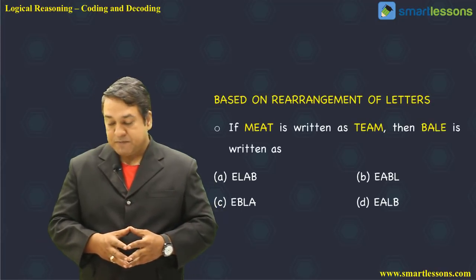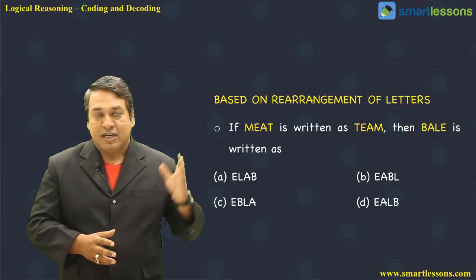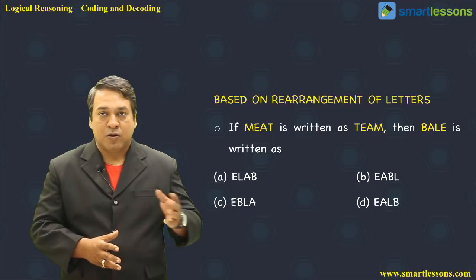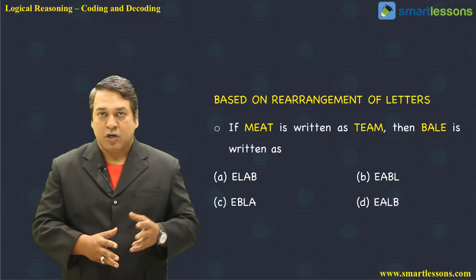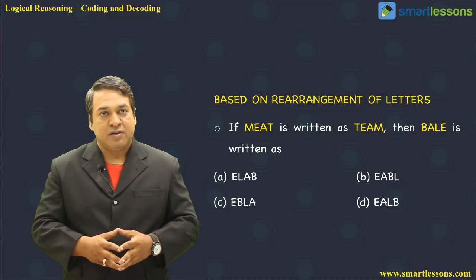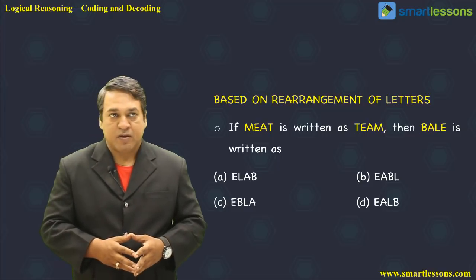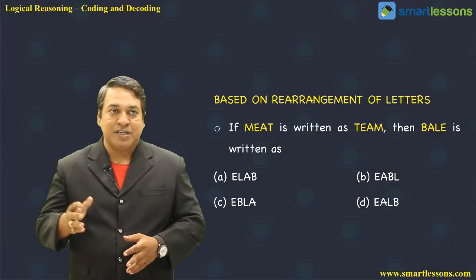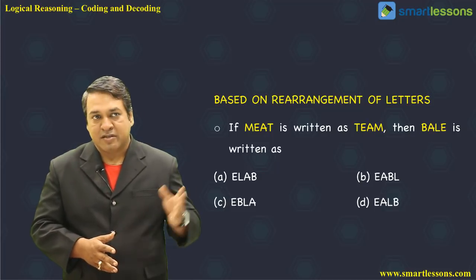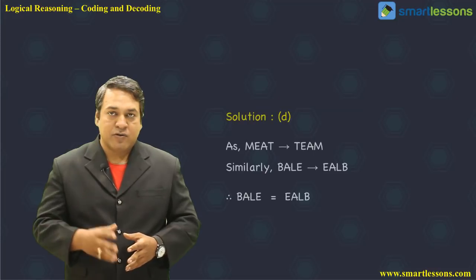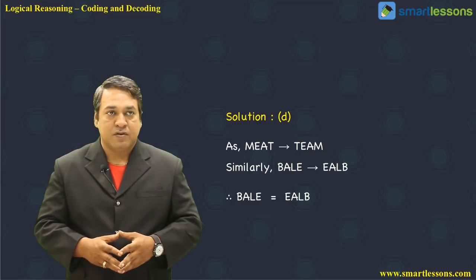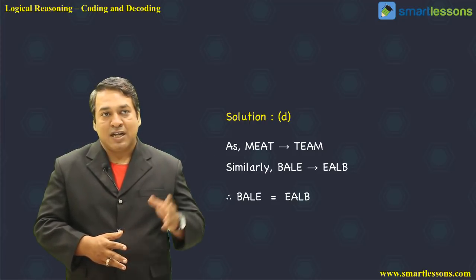Now let us look at some problems. If 'meet' is written as 'team', then 'bail' is written as — option A: ELAB, option B: EALB, option C: EBLA, option D: EALB. The word 'meet' is coded as 'team' — T, E, A, M.